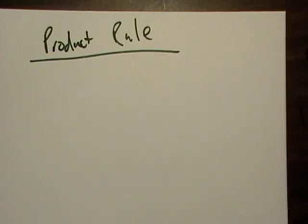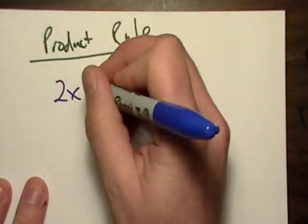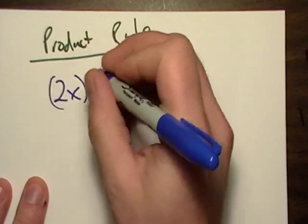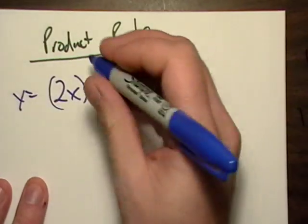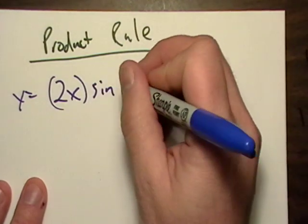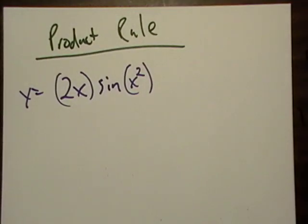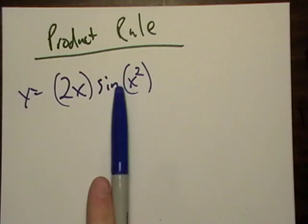Okay, welcome to the product rule. Let me write down an example here real quick of the product rule. How about y equals 2x times sin(x squared)? Hopefully you haven't seen anything that looks like this yet. We know how to take the derivative of 2x, it's just 2. We know how to take the derivative of sine x.